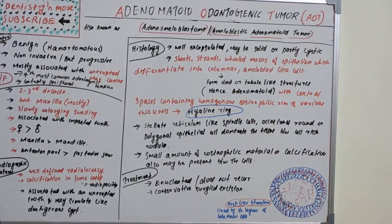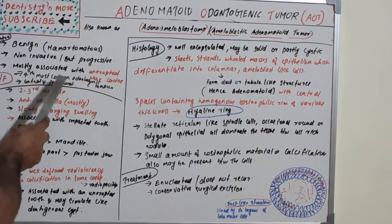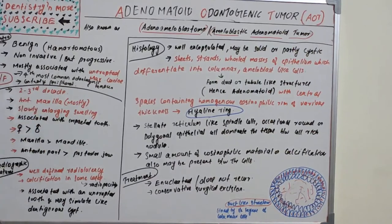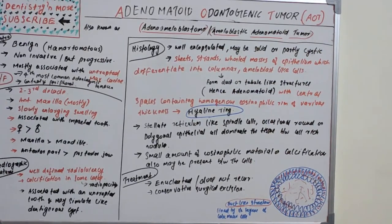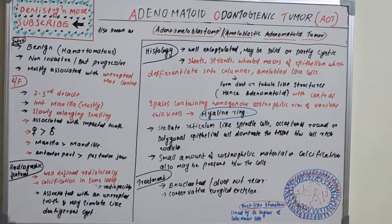The follicular subtype is associated with an impacted tooth and is commonly confused with a dentigerous cyst. In very rare cases, both AOT and a dentigerous cyst can be present in the same location simultaneously. AOT is most commonly seen in the second and third decades of life, that is between 10 and 30 years of age.